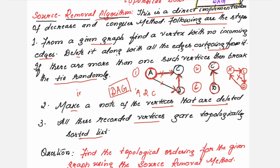To understand topological sorting, you should know a few terms: what is the in-degree of a vertex, what is the out-degree of a vertex, and what is the degree of a vertex. Knowing these makes it easier to carry out the steps for topological sorting.